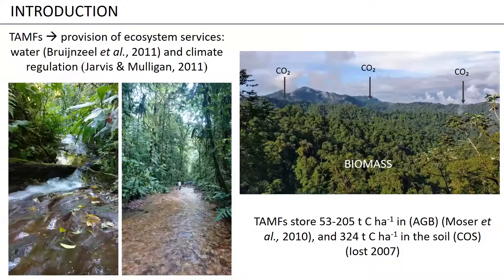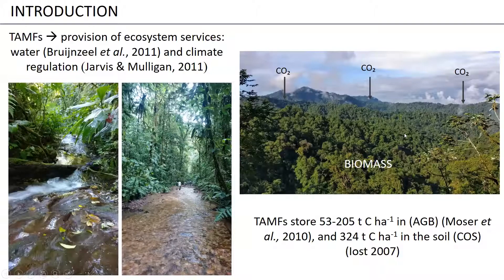These ecosystems play a key role in the provision of ecosystem services. They can act as water and climate regulators, and as climate regulators they take carbon dioxide from the atmosphere and fix it in the structure of the forest. They can store more than 200 tons of carbon per hectare just in the biomass, and more than 300 tons of carbon in the soil.